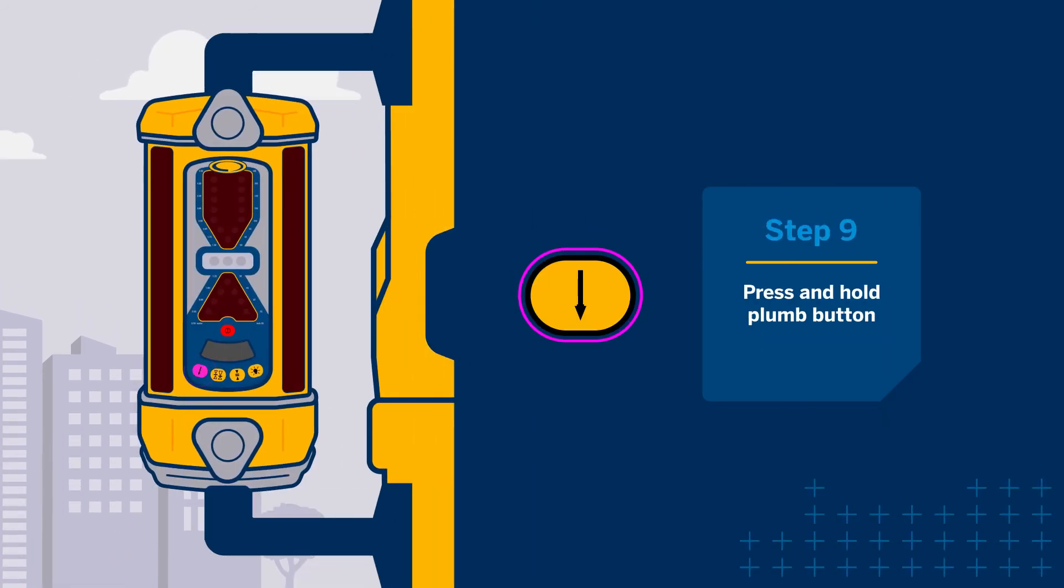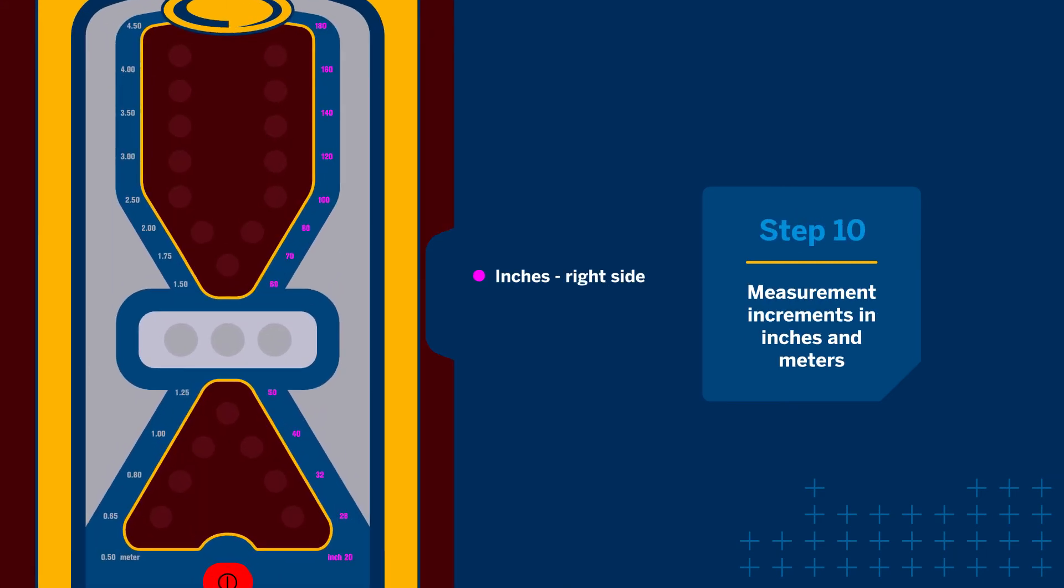Press and hold the plumb button to enter the ACE Mode. Inch units are on the right side scale. Meters are on the left side.